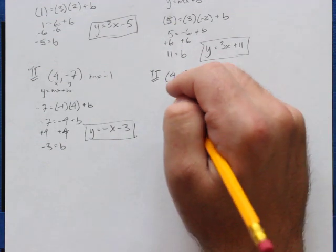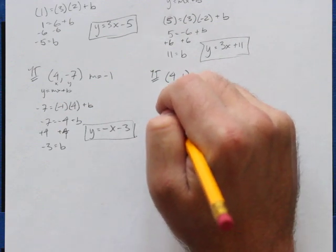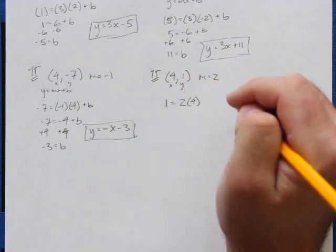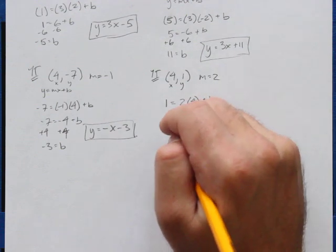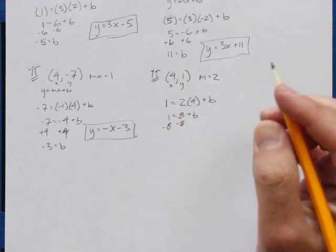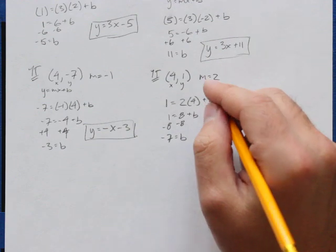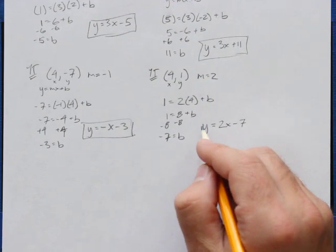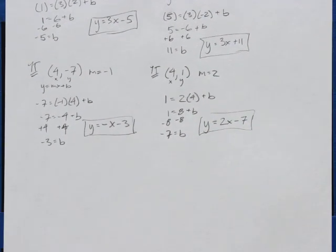Label 4 as x, 1 as y. y equals my slope times my x value plus b. 2 times 4 is 8, so 1 equals 8 plus b. Subtract 8 from both sides and I get negative 7 equals b. So y equals 2x minus 7, which is my y-intercept. Hopefully you guys got those right.